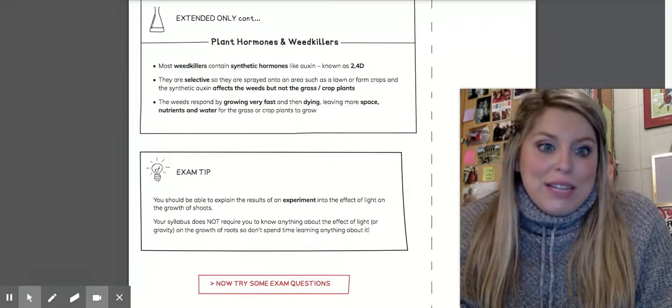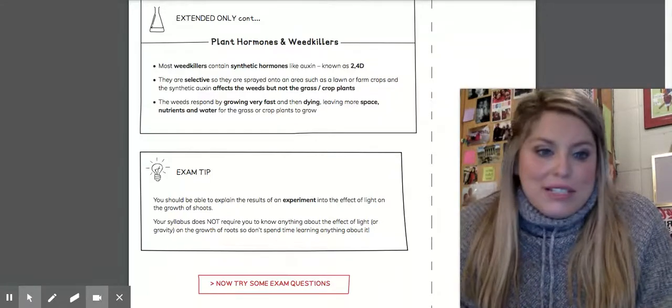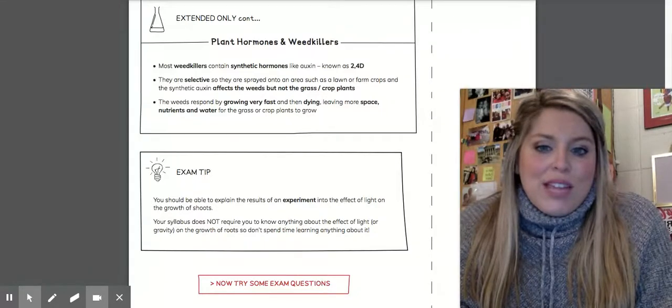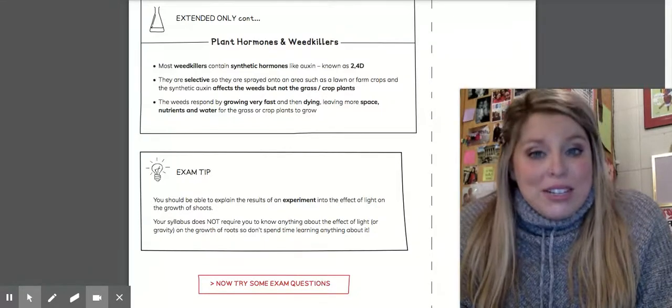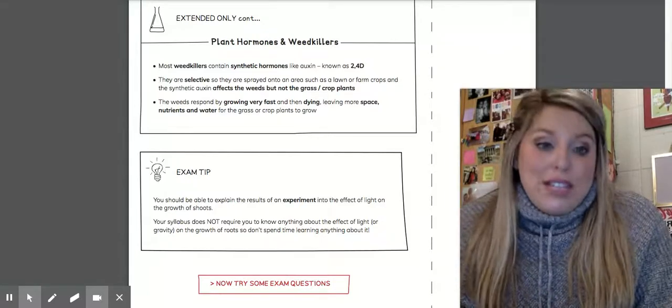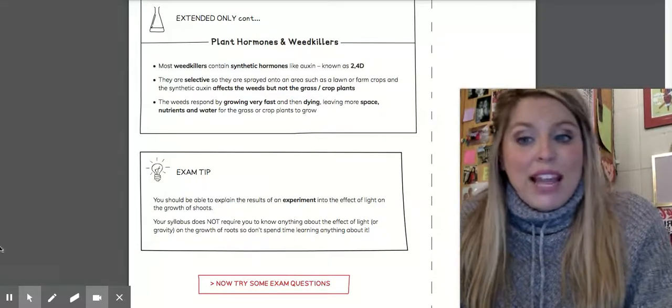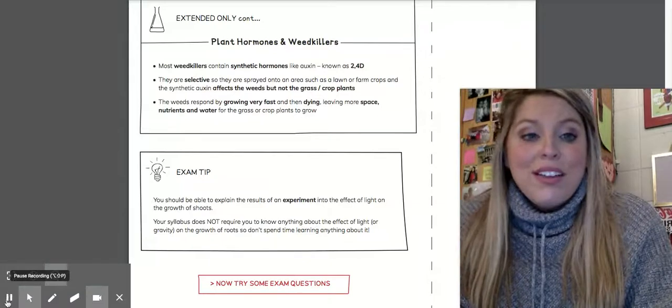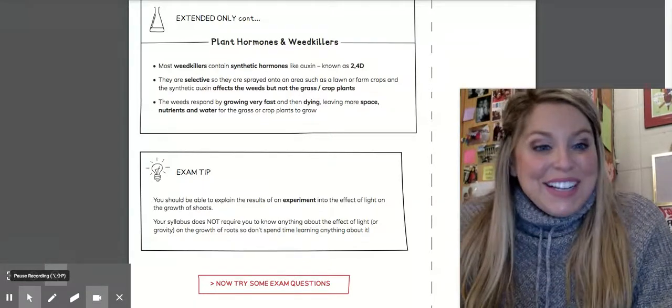2,4D is the type of weed killer that the book likes to point out for this. So this wraps up this section. Go ahead, get your notes, head on over to your CFU, and then your assignments for the day. Super proud of y'all. And that's it for this unit. We did it.